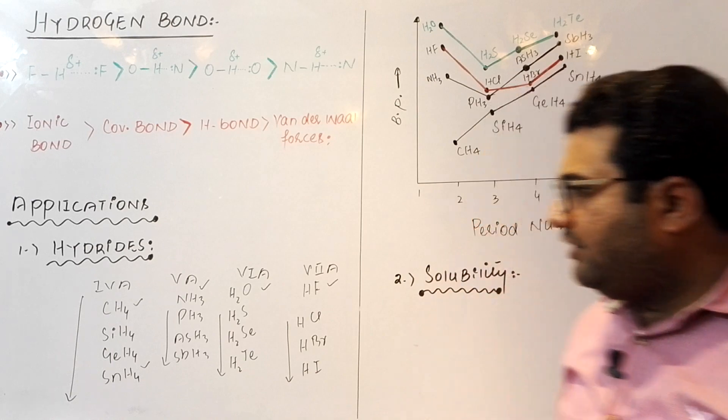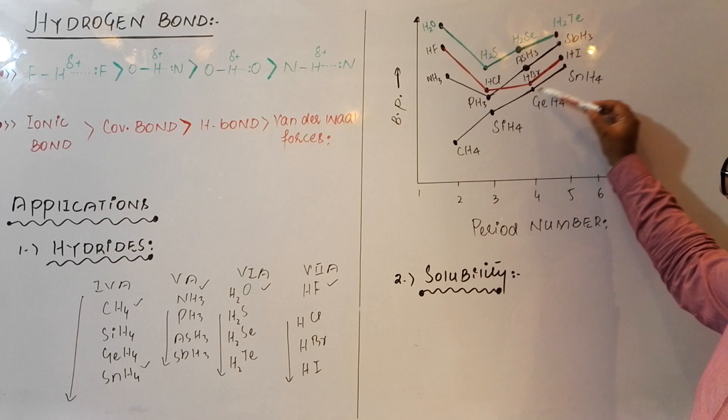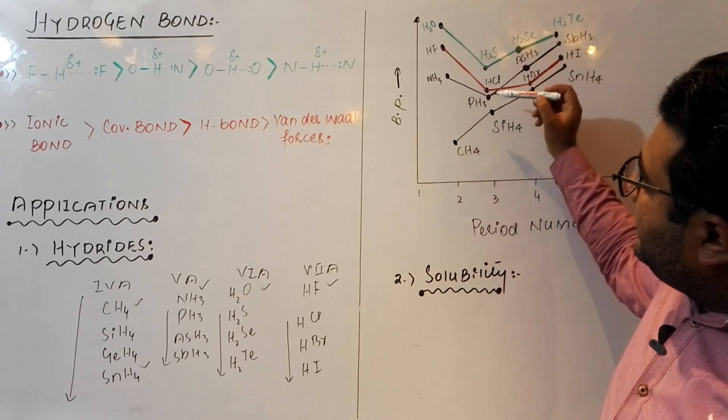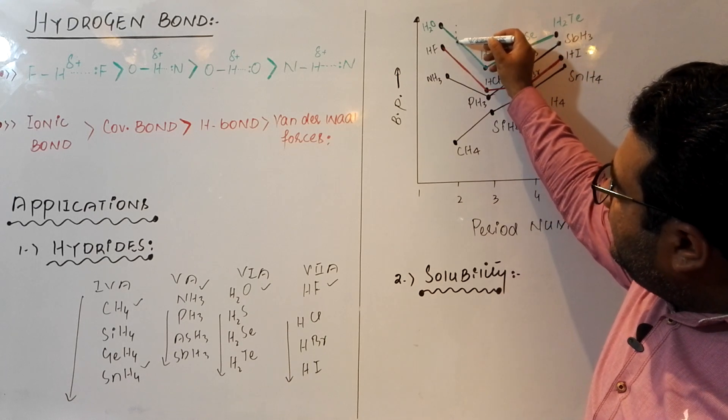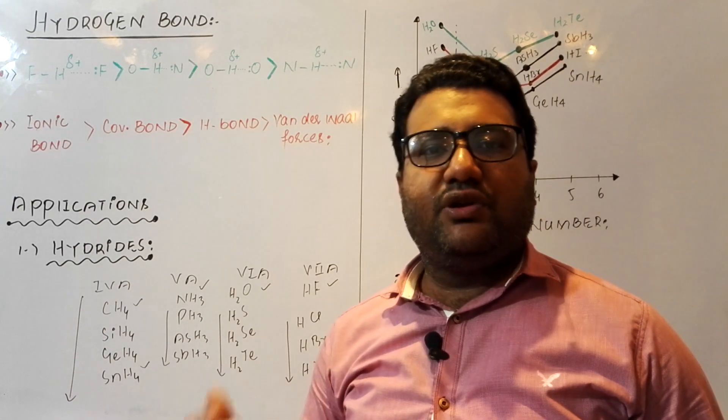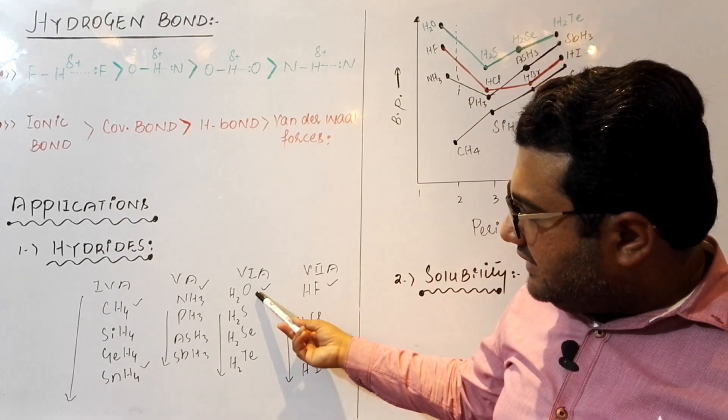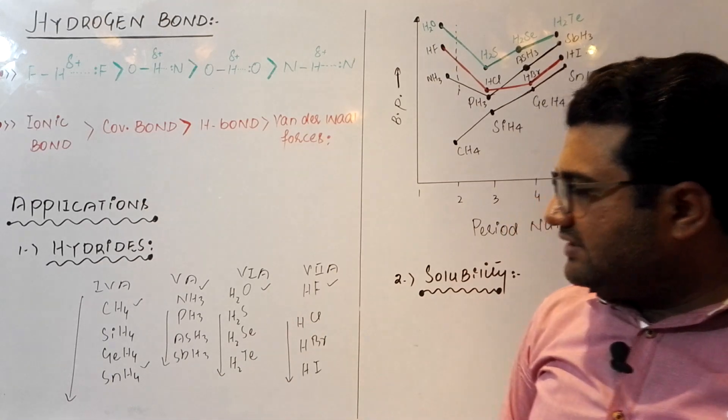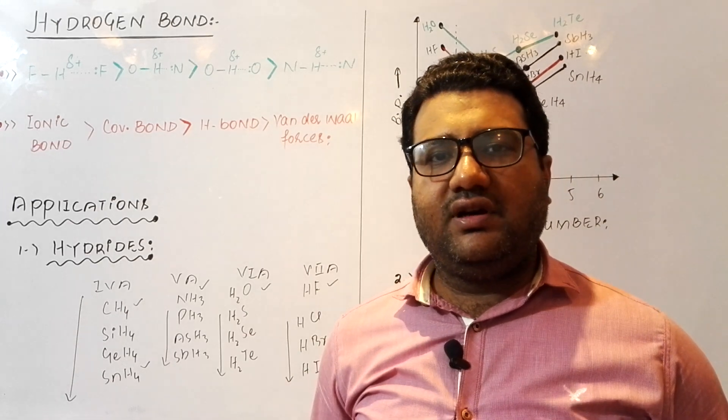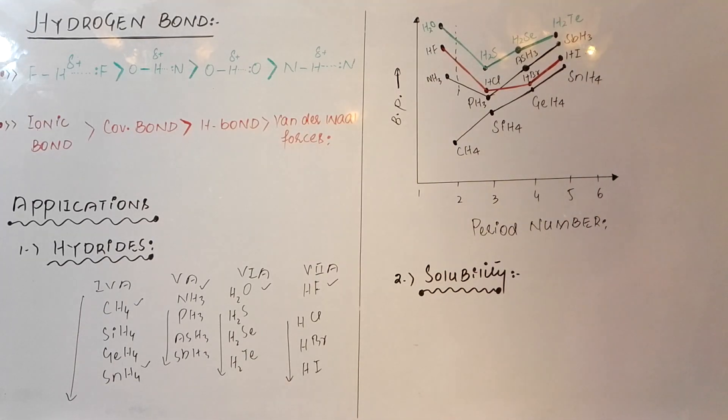This is the graph. As you move down in 4A, the boiling point keeps on increasing. But in 5A, 6A, and 7A, you can see that these three hydrides are present at the top. And that is their anomalous behavior, and it is just because of the presence of hydrogen bonding. You can also say that water exists in liquid form, while H2S is a gas. This difference is just because of the presence of strong hydrogen bonding in water, but the weak dipole-dipole force in H2S.